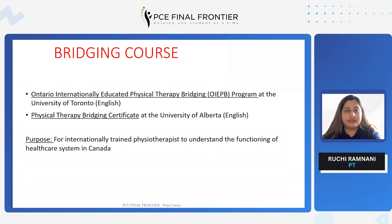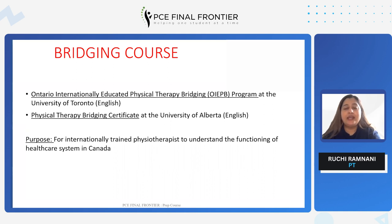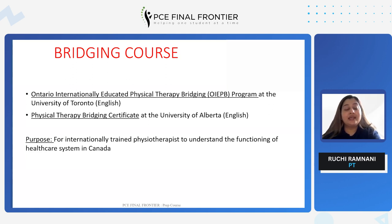Moving forward, the bridging courses. The purpose of the bridging course is for internationally trained physiotherapists to understand the functioning of the healthcare system in Canada. This is a mandatory requirement for every internationally trained physiotherapist. The course runs for about six to nine weeks, most tentatively up to six weeks. It's a self-paced course done virtually and can be completed with either the University of Toronto or the University of Alberta — you can check the details on their respective websites. This bridging course can be done while your credentialing has already started or before. You do not have to wait to finish this course before starting the credentialing process; you can send in your documents and do this course side by side.